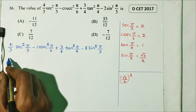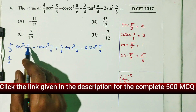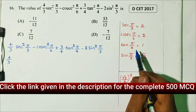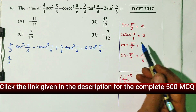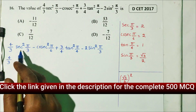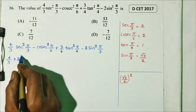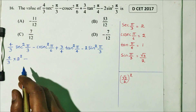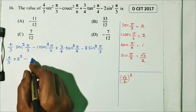4/3 times sec²(π/3). π/3 is nothing but 60 degrees. The value of sec(π/3) is 2, so sec²(π/3) is 4. Then minus cosec²(π/6). cosec(π/6) value is 2, so that is 2 squared.